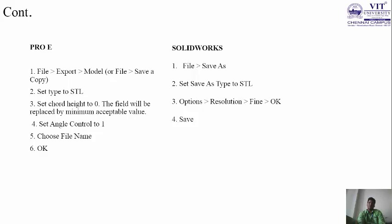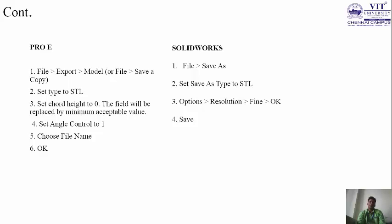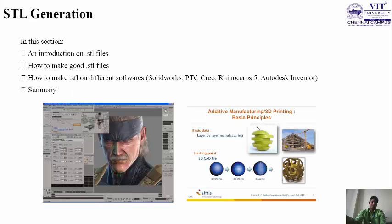For SolidWorks: go to File > Save As. Set Save As Type to STL, then go to Options > Resolution. Set it to Fine — you want the resolution to be fine. If you have sufficient memory it is better to give a fine resolution; if memory is limited, give a coarse setting instead. Then click Save.